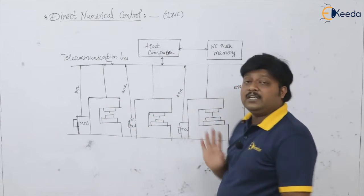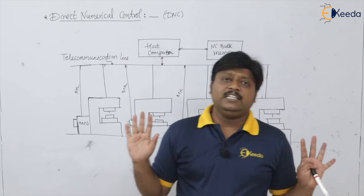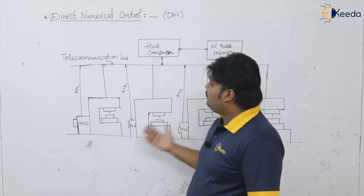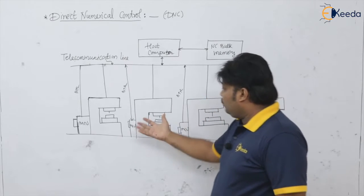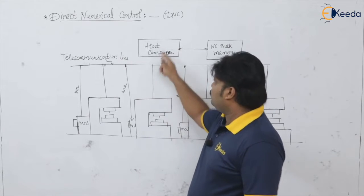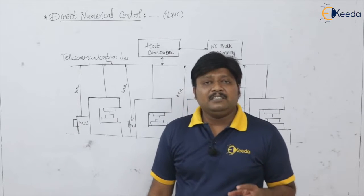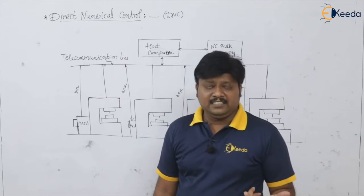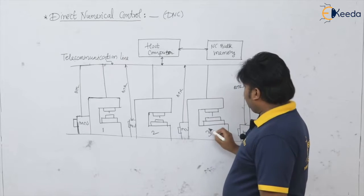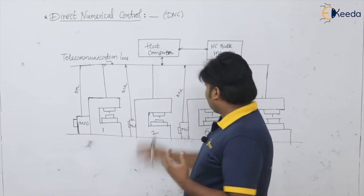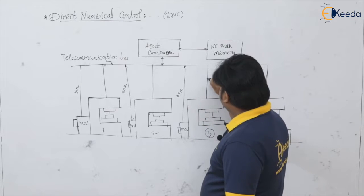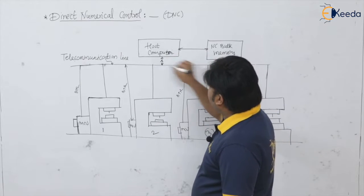Once the programs are downloaded and the command to start is given from the host computer, every machine begins working. After completing its work, one of the machines — say machine number three — comes to rest and starts sending a signal to the host computer indicating it has finished and asking what to do next.